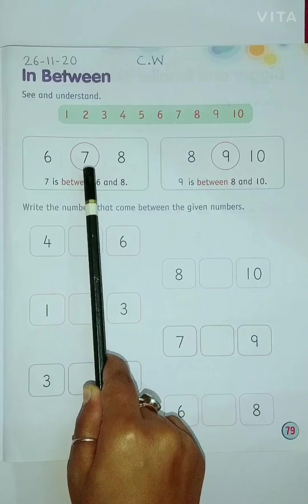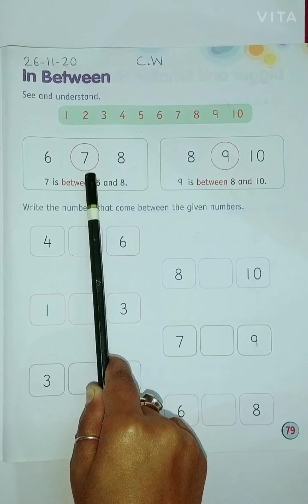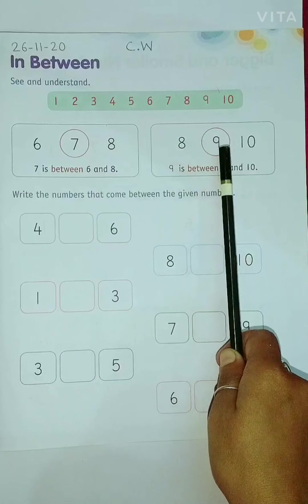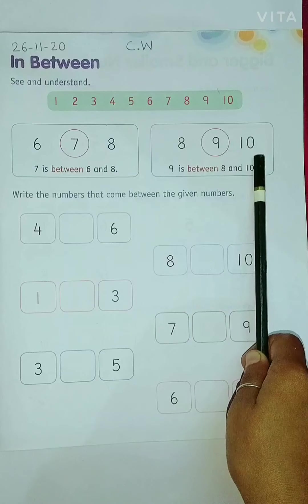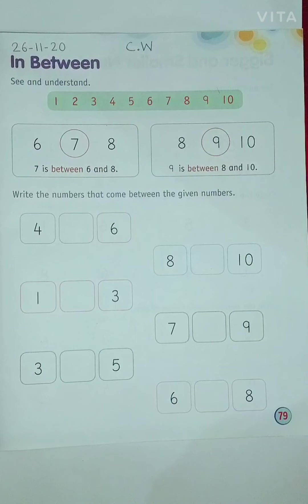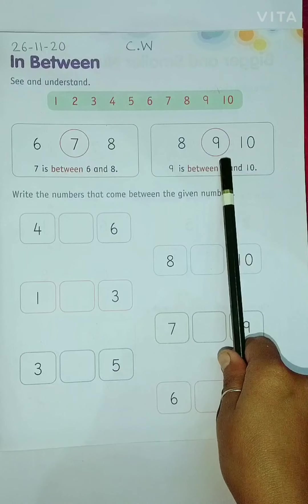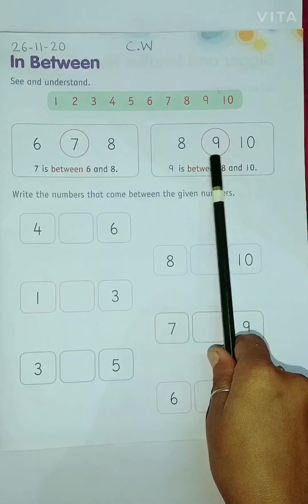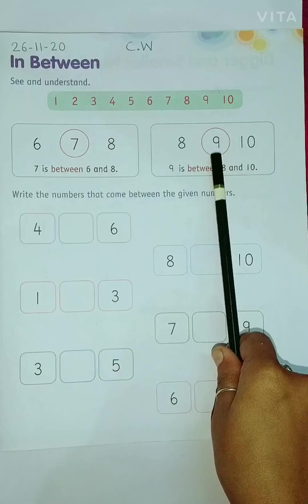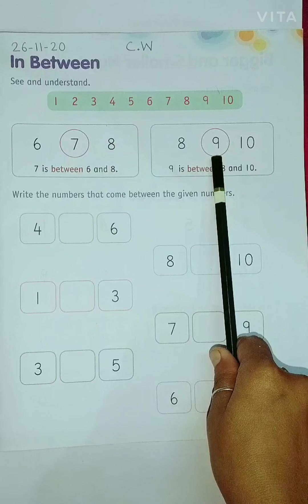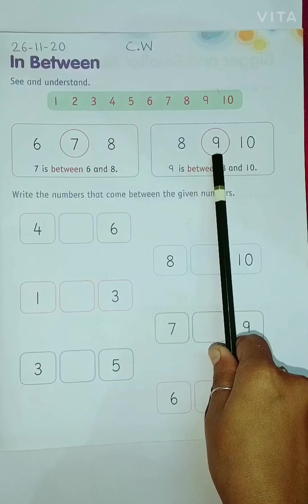Now, children, let us move to our next example: 8, 9, 10. Tell me which is the between number? 9, right? Because it comes after 8 and before 10. So, 9 is our between number, or you can say it is a middle number.